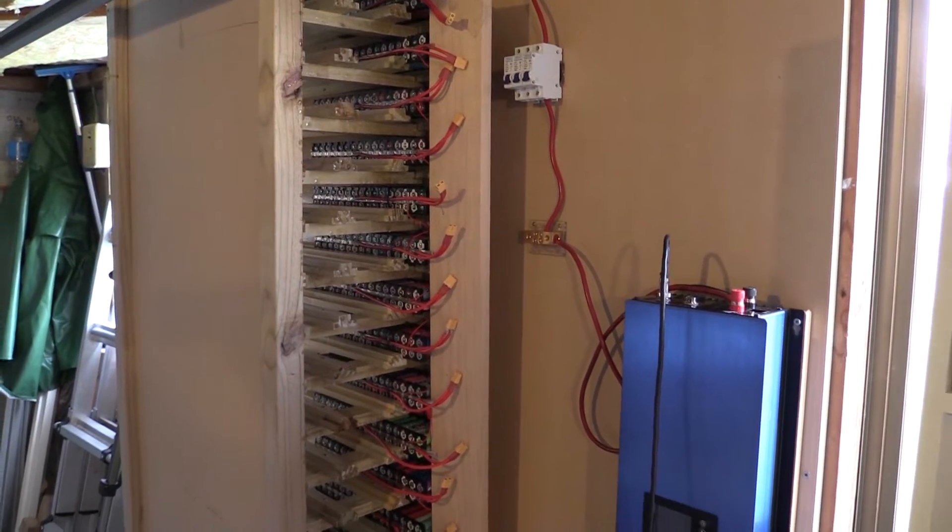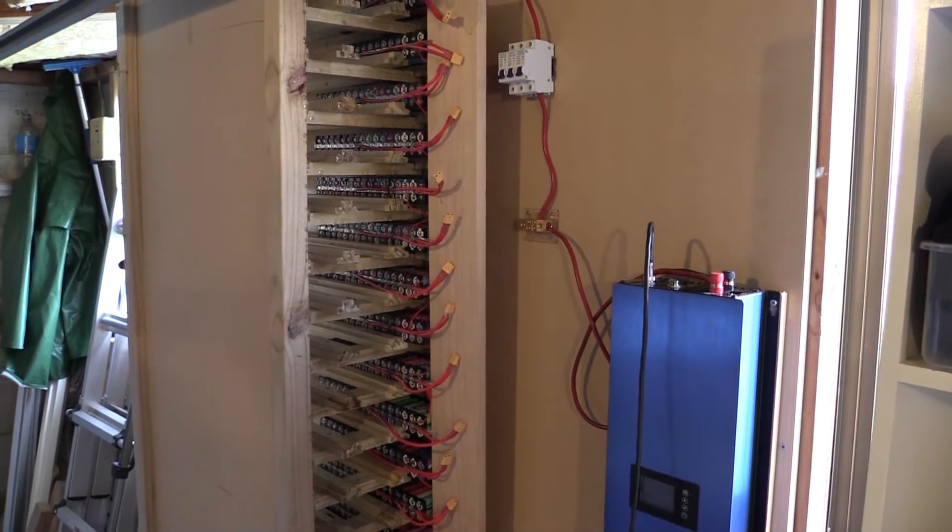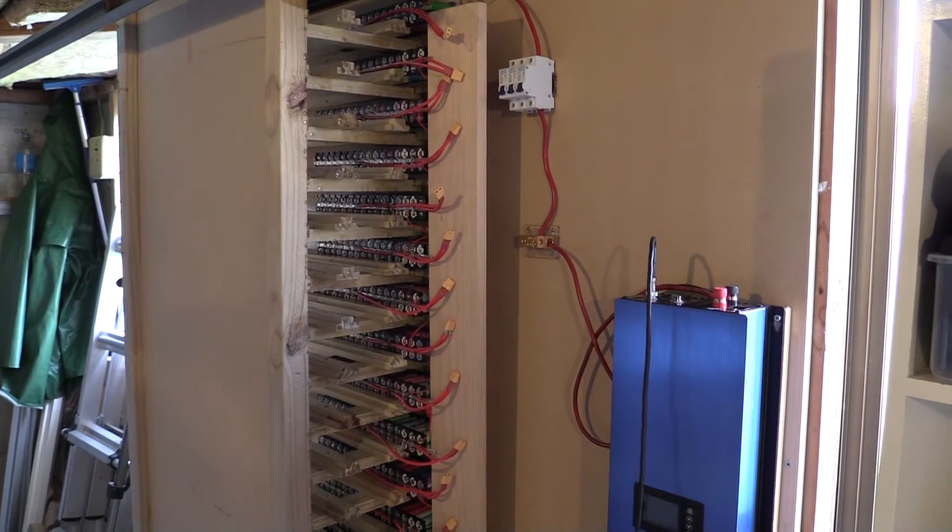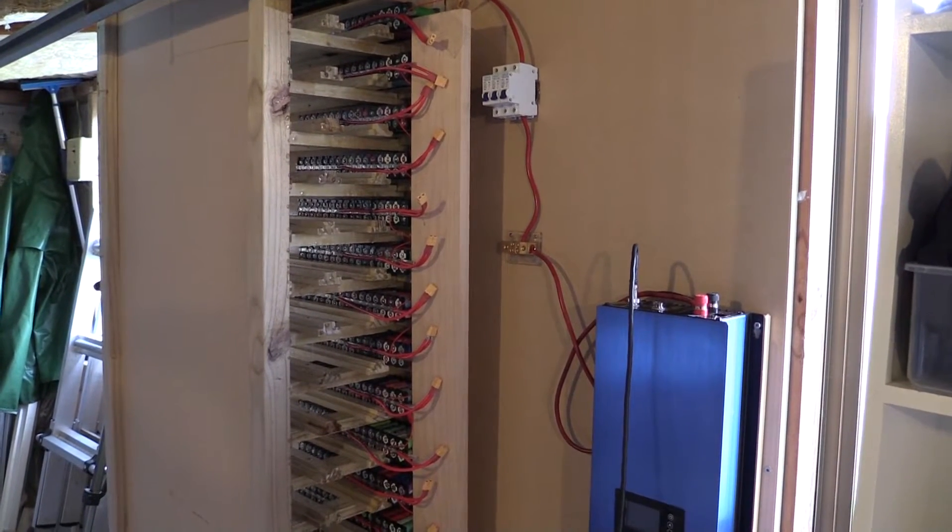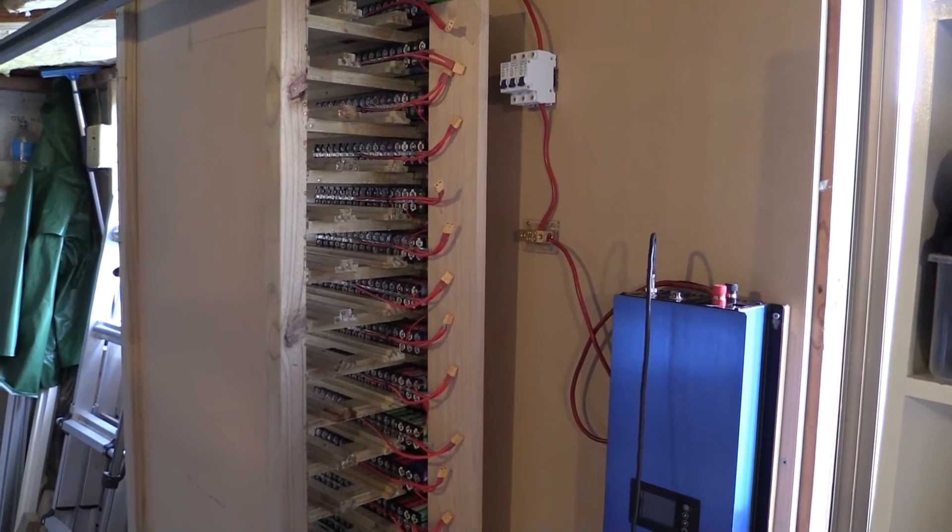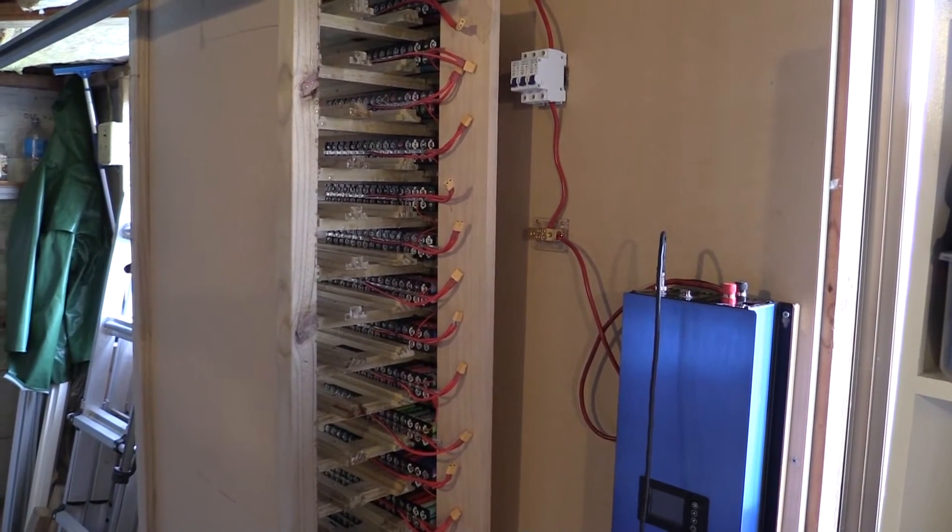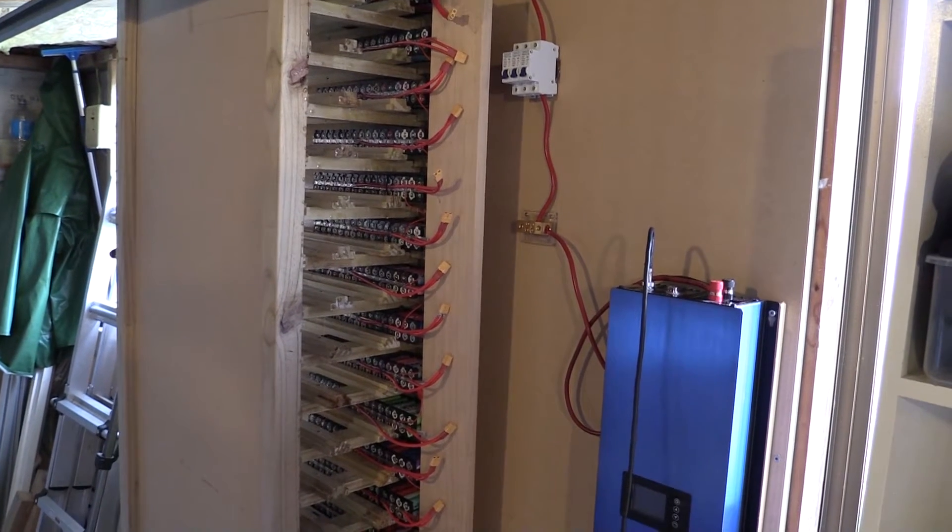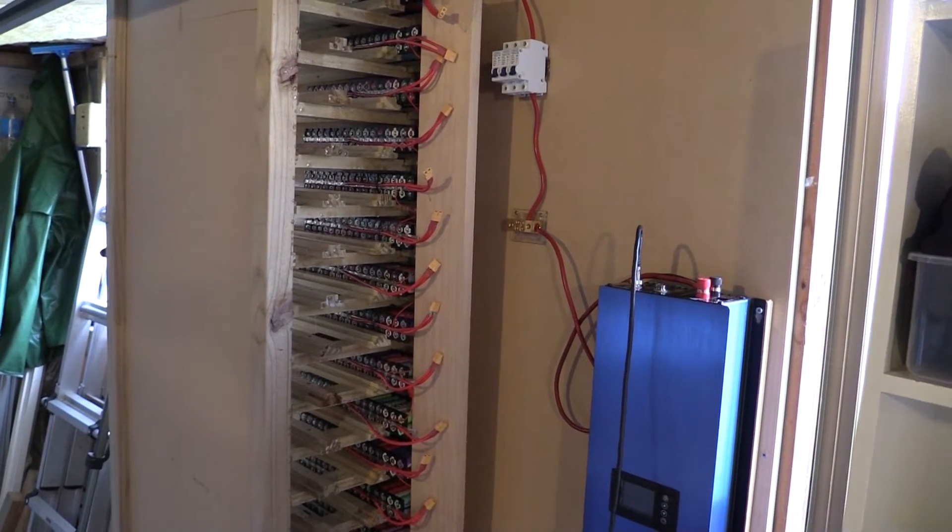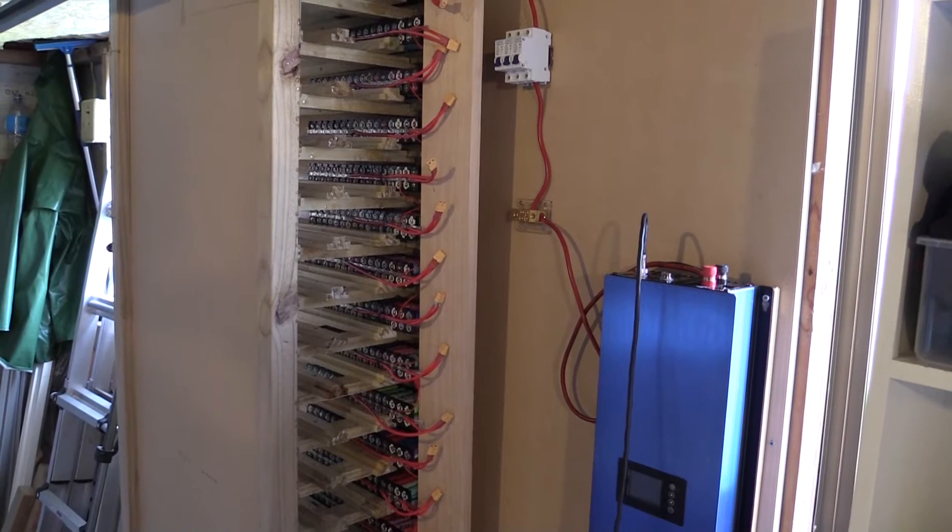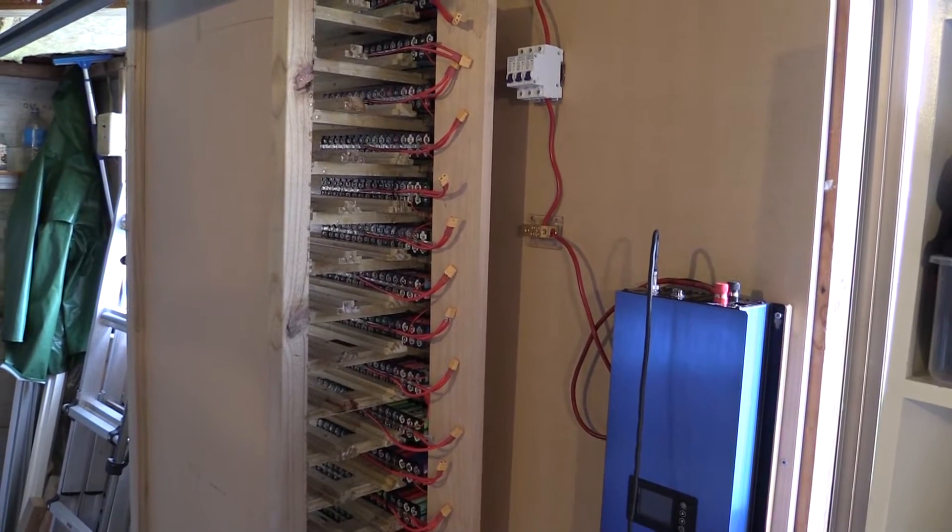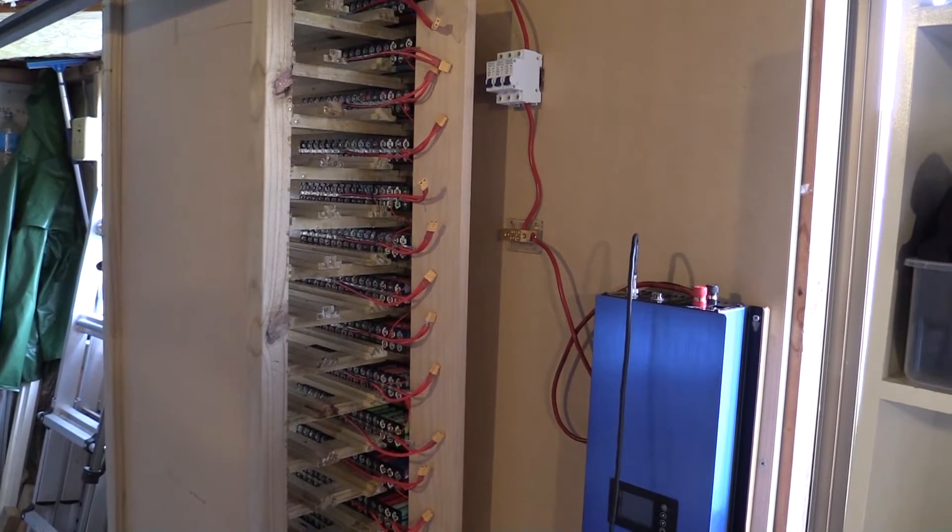The bottom three packs, because I charged them up individually using the IMAX B6, have a lot more charge in them than all the rest of the packs. This created a bit of a problem because while I was playing around with charging the thing, I charged it up to 80 volts and the bottom three packs that were already almost charged went slightly over 4.2.